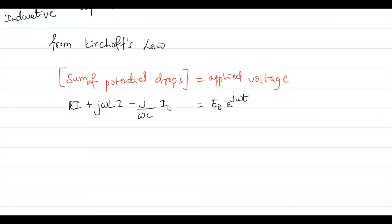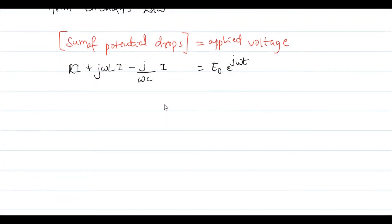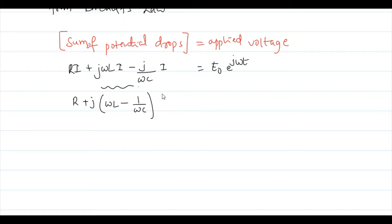Taking I outside the equation, we get I·[R + j(ωL − 1/ωC)] = E₀ e^(jωt). We call this equation (1).